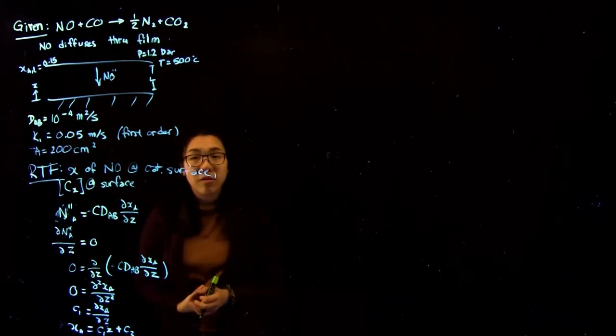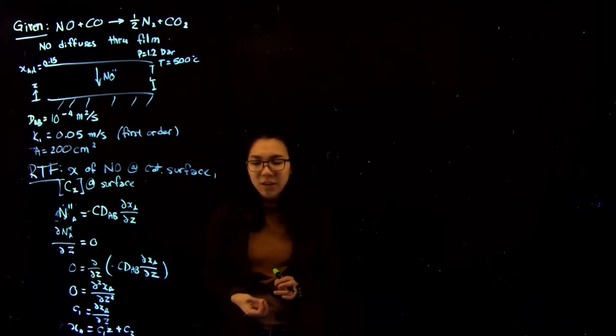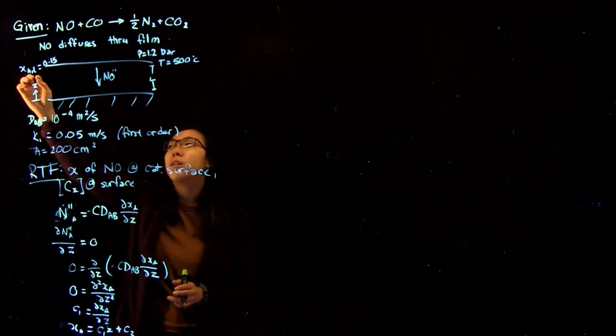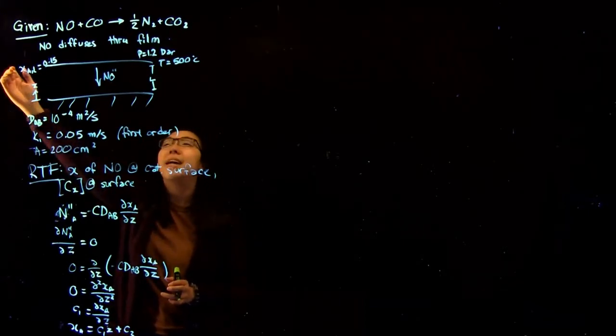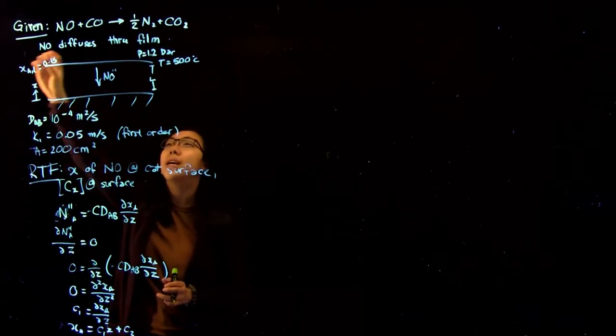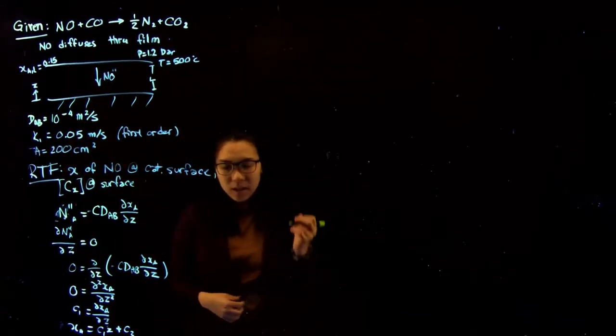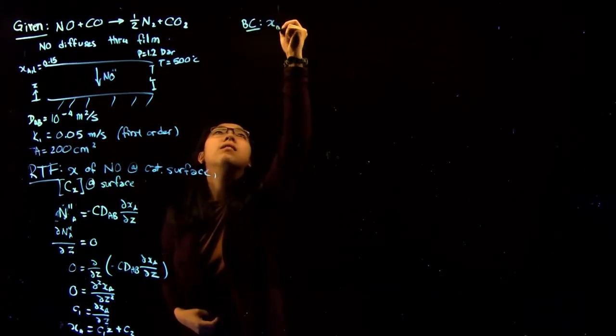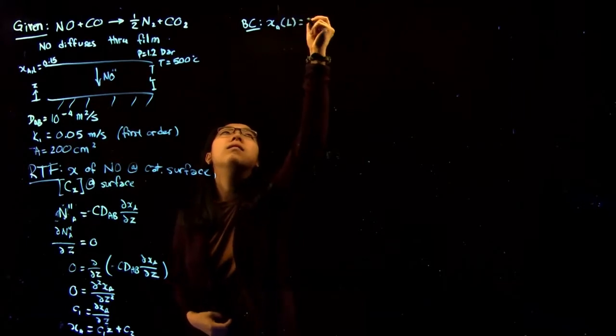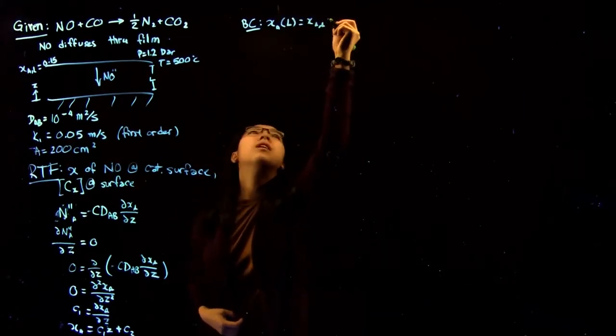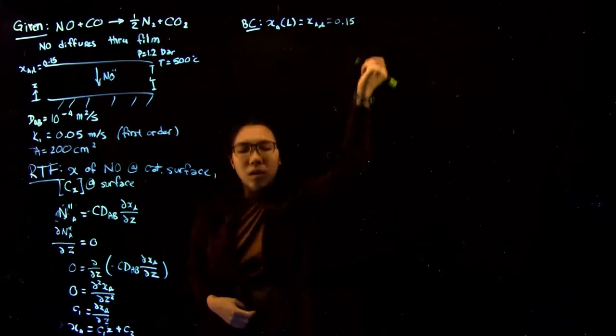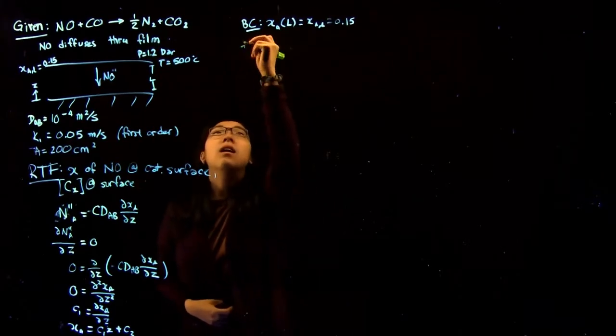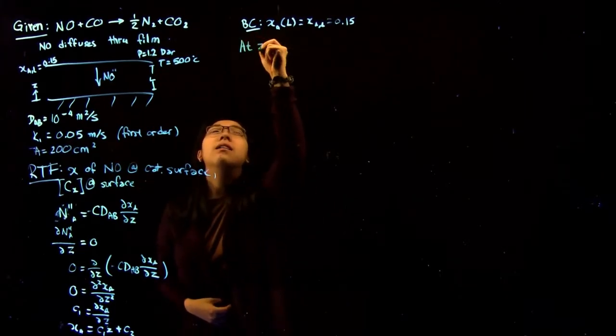So now we have to find our boundary conditions, which is a little difficult in this case because the only thing that we really have is the concentration of X or compound A at L, so in this upper region. So we know that the boundary conditions, XA at L is equal to XA_L, which in our case we're given is 0.15.